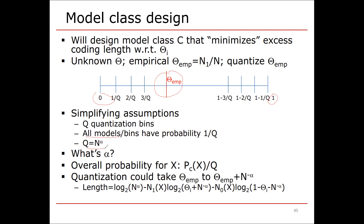We're going to take q equal to n to the power of alpha, and we're going to optimize alpha. Why n to the power of alpha? We'll see that it comes out of the math. The overall probability for our data x is pc(x) using the best quantized model, divided by q. Instead of theta_EMP, we have theta_EMP plus a quantization error. The bin width is 1/q = n^(-alpha), so the quantization error is at most n^(-alpha).